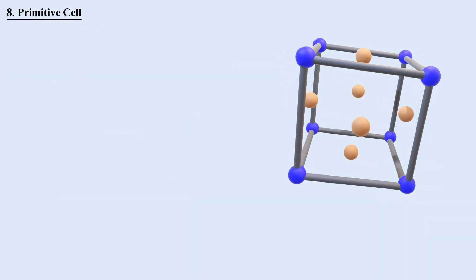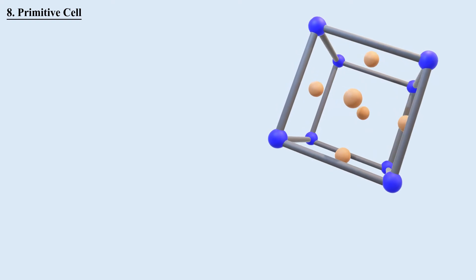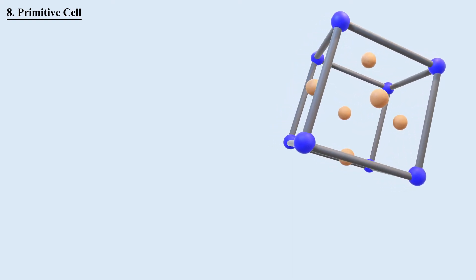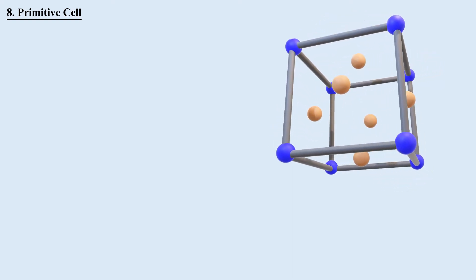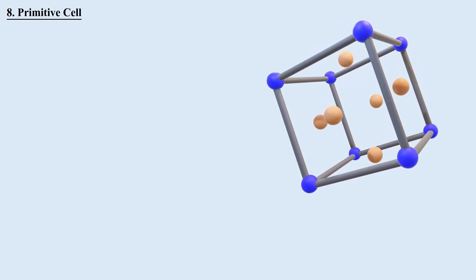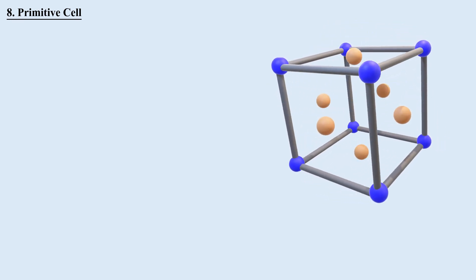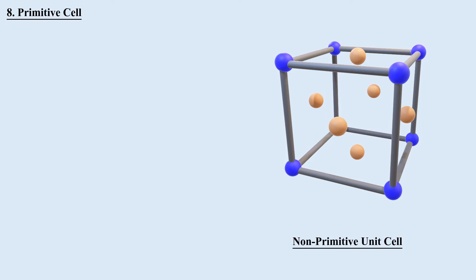Primitive cell: Any cell is called a primitive cell only when the total number of atoms inside it is 1. Since the total number of atoms inside FCC is 4, FCC is a non-primitive unit cell. However, using the Wigner-Seitz method, we can convert any non-primitive cell into a primitive cell.